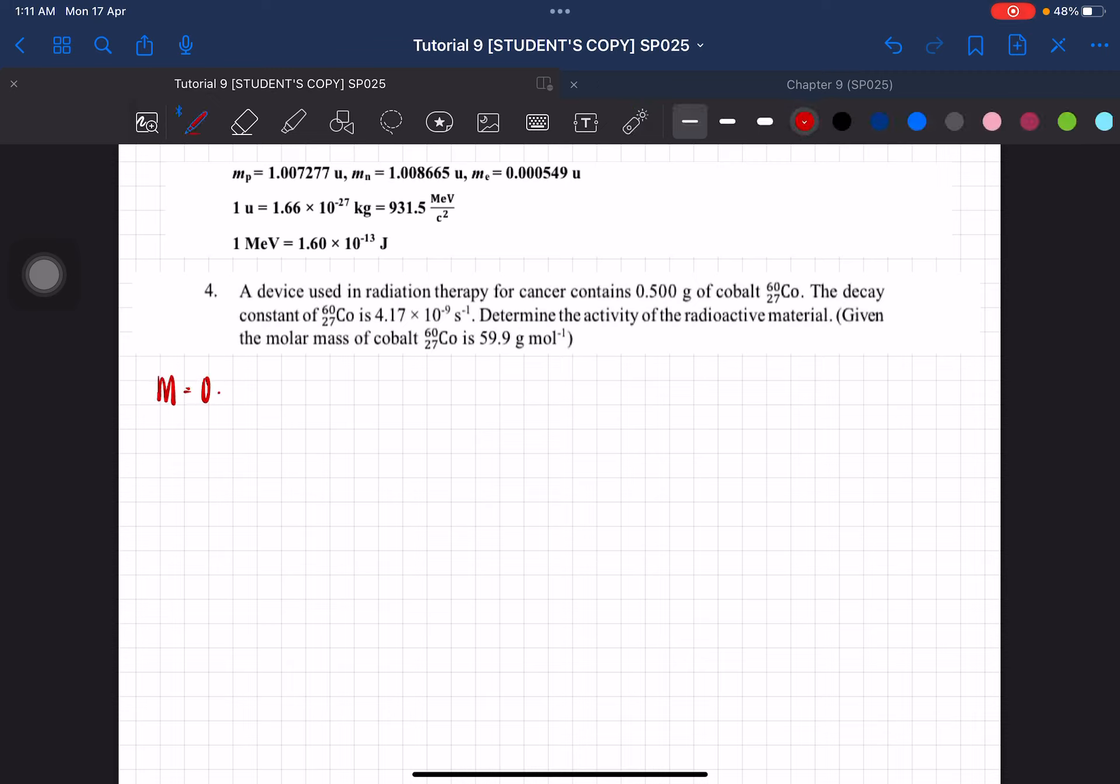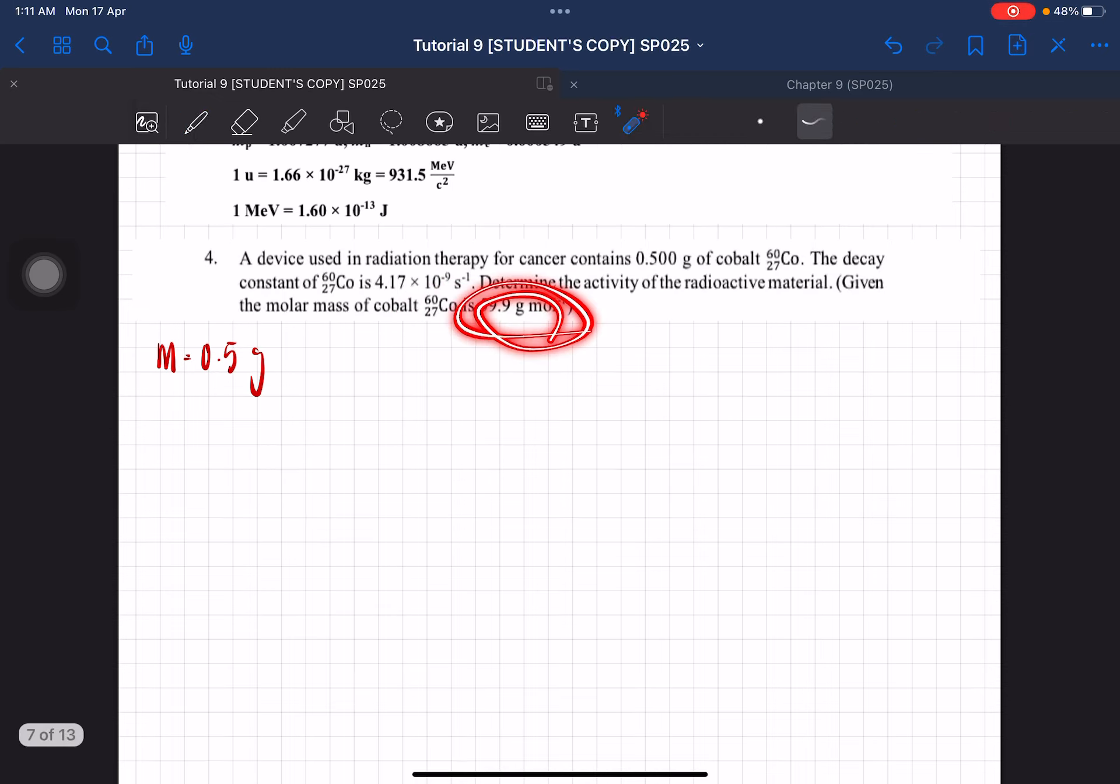So M is 0.5 gram. Convert this into kilogram. It will be... Do I need to? Let me just check. Oh, no. We don't have to because the question gives us the molar mass in grams per mole.